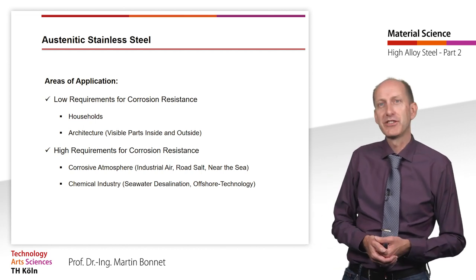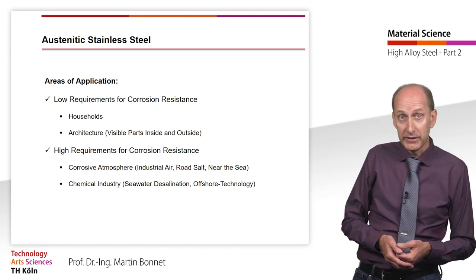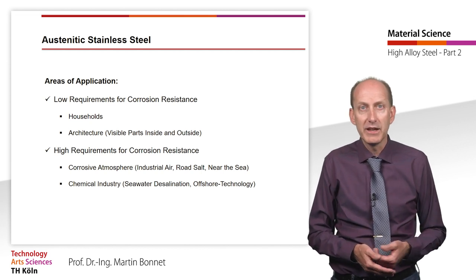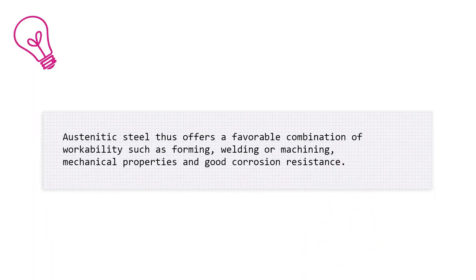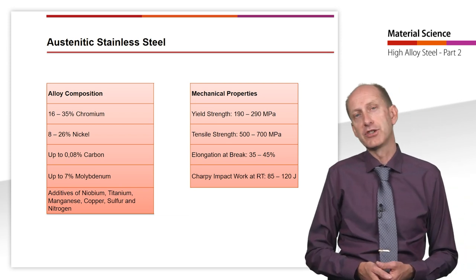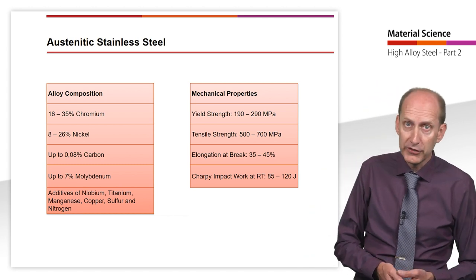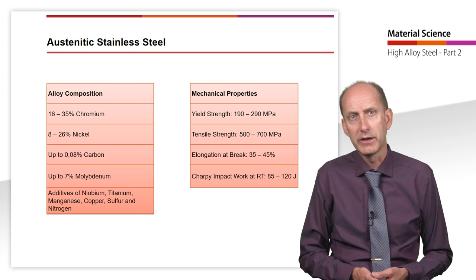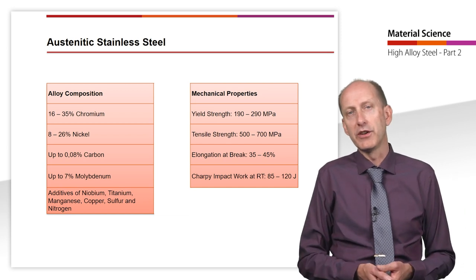However, high alloy special steel is also available for projects in the chemical industry, in the fields of seawater desalination, environmental technology and offshore technology with the highest corrosive load. Austenitic steel thus offers a favorable combination of workability such as forming, welding or machining, mechanical properties and good corrosion resistance. As with ferritic steel, a fine-grained microstructure is a basic requirement for good technological properties. A homogeneous, precipitation-free microstructure is achieved by a final heat treatment.